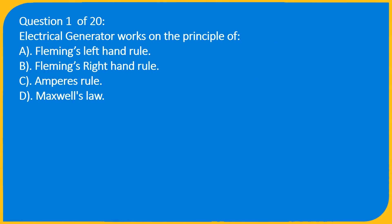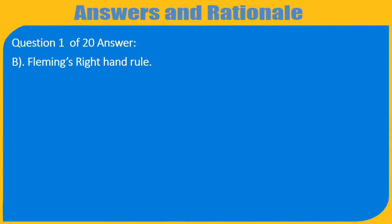Question 1 of 20: An electrical generator works on the principle of: A. Fleming's left-hand rule, B. Fleming's right-hand rule, C. Ampere's rule, D. Maxwell's law. Answer: B. Fleming's right-hand rule.